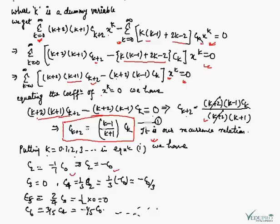For k = 2: c₄ = (2-1)/(2+1) · c₂ = (1/3) · c₂. So c₄ = (1/3)(-c₀) = -c₀/3. Similarly, in the same way, we can find c₅, c₆, and further constants.